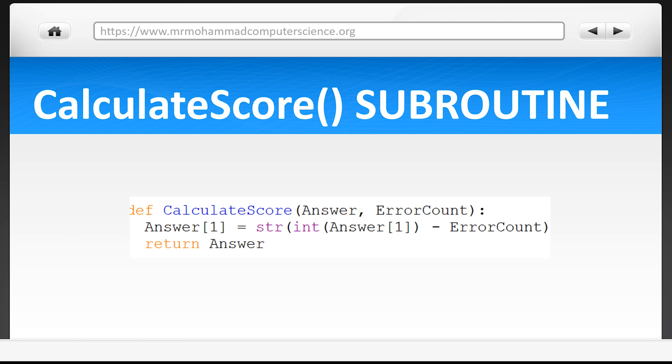You can see how short this subroutine is. All it's doing is taking the amount of errors the user makes away from the value in the index one position of answer. You can take the assumption that the index one position of answer is the score.